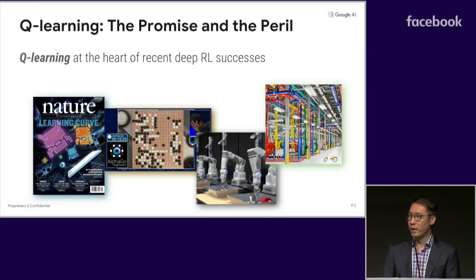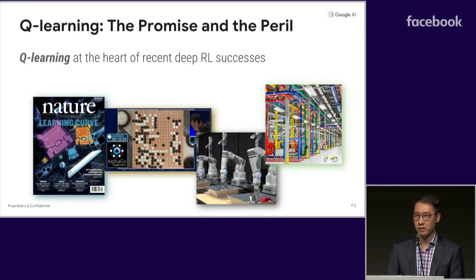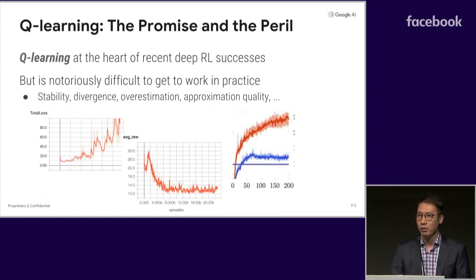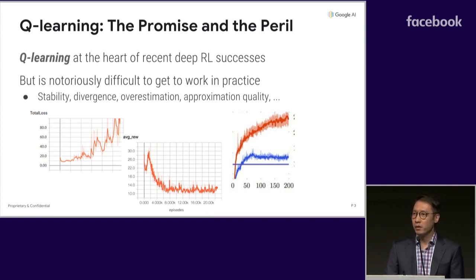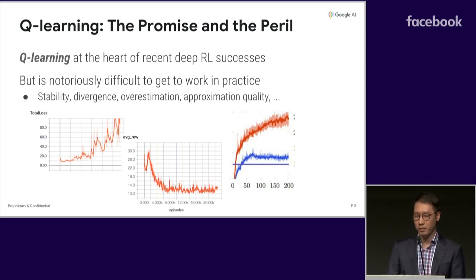We've seen some tremendous success with deep RL in recent years in a variety of domains, and Q-Learning has played a crucial role in many of these successes. In fact, it is one of RL's foundational algorithms. But Q-Learning with any sort of function approximation, including deep Q-Learning, is known to be brittle and can be difficult to make work well in practice. As a result, there's a whole industry devoted to the creation of new algorithms, training techniques, and modeling tweaks to address some of these problems.